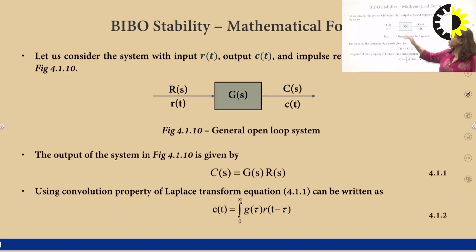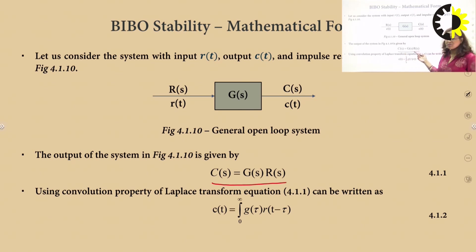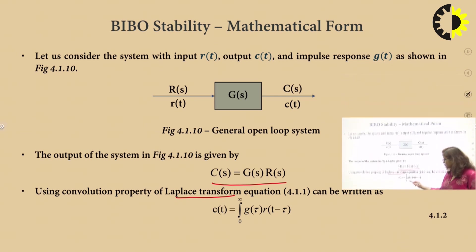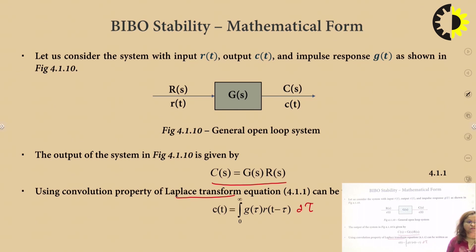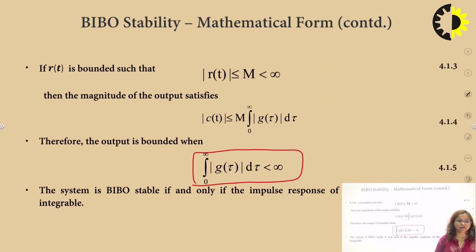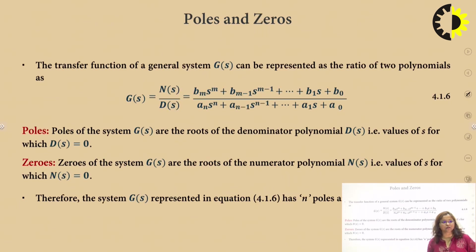If we talk about any system, let R(s) be the input and C(s) be the output. The output can be written as R(s) times G(s). Using the convolution property, multiplication in the s-domain corresponds to convolution in the time domain. So we can write C(t) as the convolution of g(t) and r(t), that is the integral from 0 to infinity of g(tau) times r(t minus tau) d-tau. This function is finite if the impulse response is finite, so the system is BIBO stable if and only if the impulse response is integrable and finite.